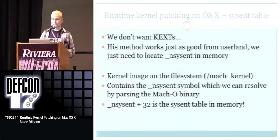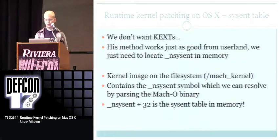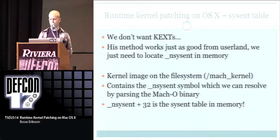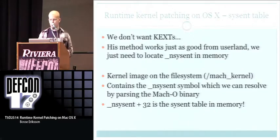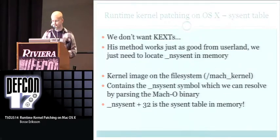That method works for KEXTs, but we don't want to use KEXTs. To do this from user land, we just need to locate the number of sysentry entries in memory. On OS X the kernel image is on the filesystem called mach_kernel in slash, and it contains the nsysent symbol, which can be resolved by parsing the Mach-O binary. You take that symbol plus 32 and there you have the sysentry table — no kernel extension needed.